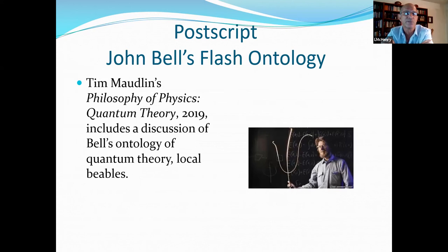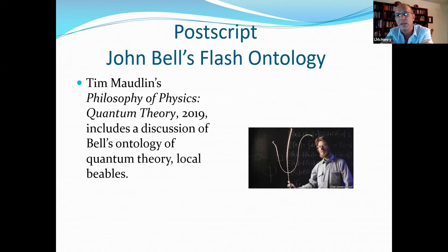Now, this is a postscript on John Bell's flash ontology. It turns out that unbeknownst to me, that John Bell had proposed an event ontology as well. And I didn't get to include this in my book because I didn't know about Bell's work. I knew about his theorem, but I didn't know anything about his ontological speculations. So it was Tim Maudlin's book on philosophy of physics, quantum theory, that included this interesting discussion of Bell's ontology, what is called an ontology of local beables.